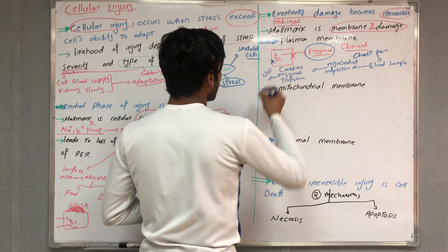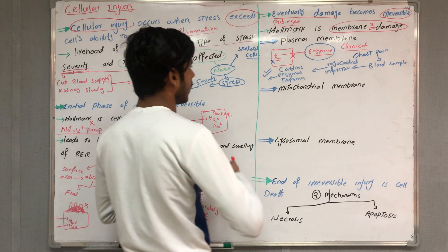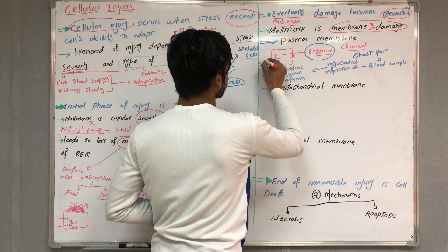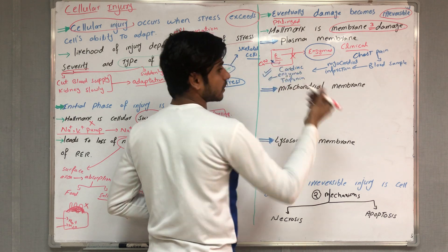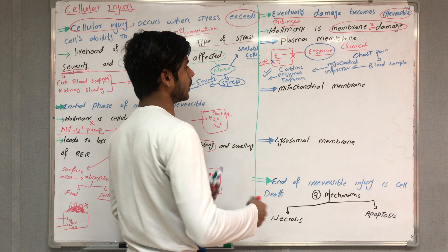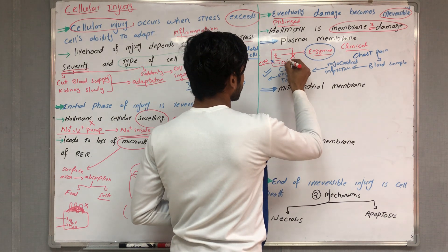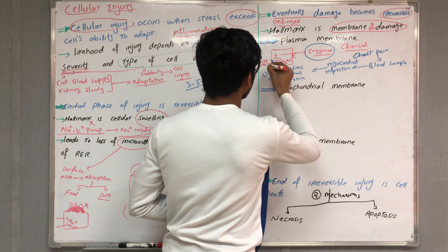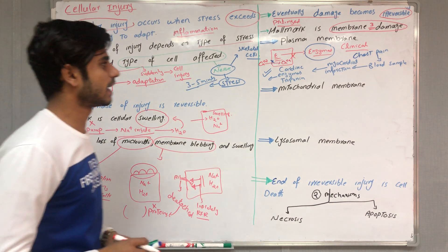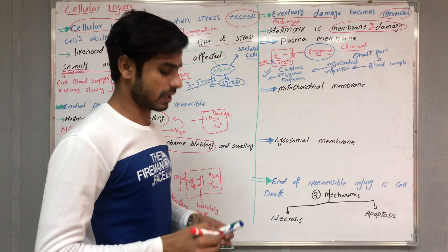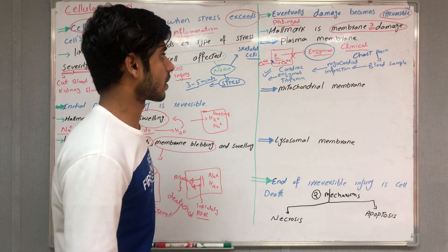When plasma membrane damage occurs, calcium — which is in greater concentration outside the cell — diffuses inside through the damaged membrane. Calcium influx causes destruction of the organelles.